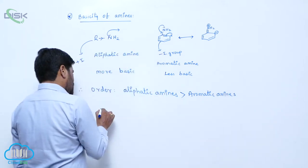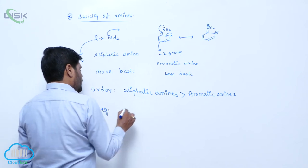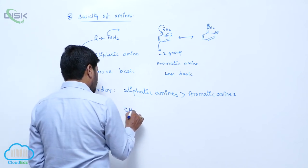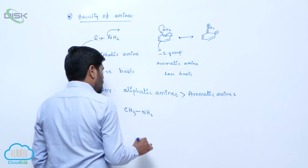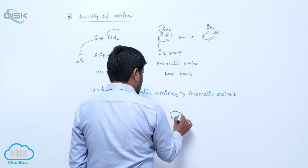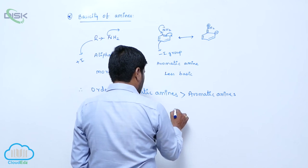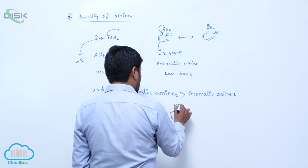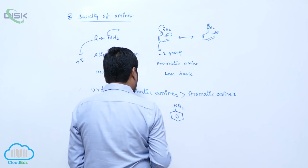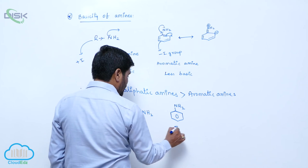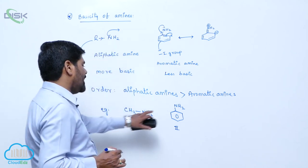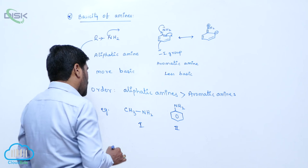For example, one is methyl amine. Another one is aniline. So, therefore, this is the first one. This is the second one. The first one is aliphatic amines. Second one is aromatic amines.